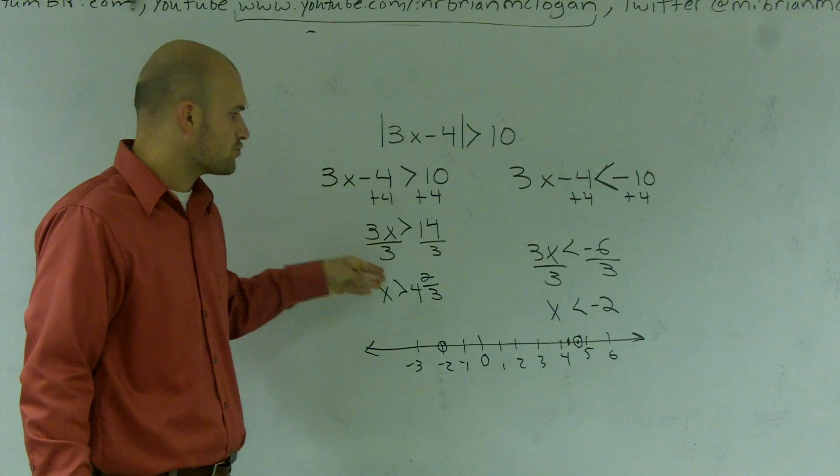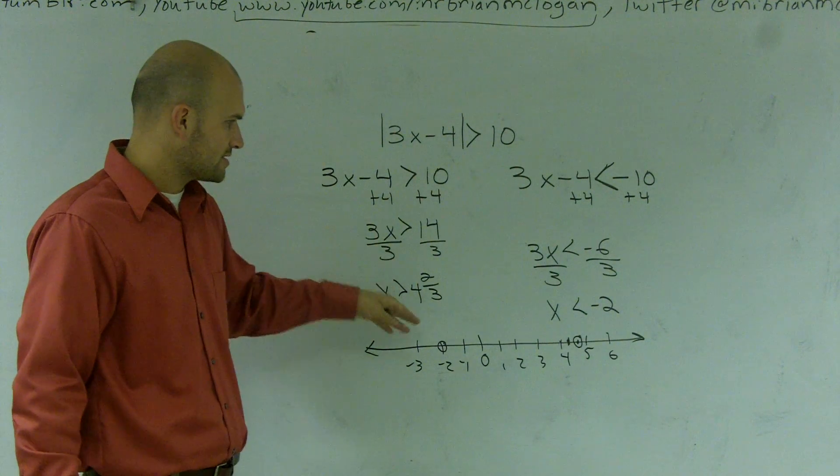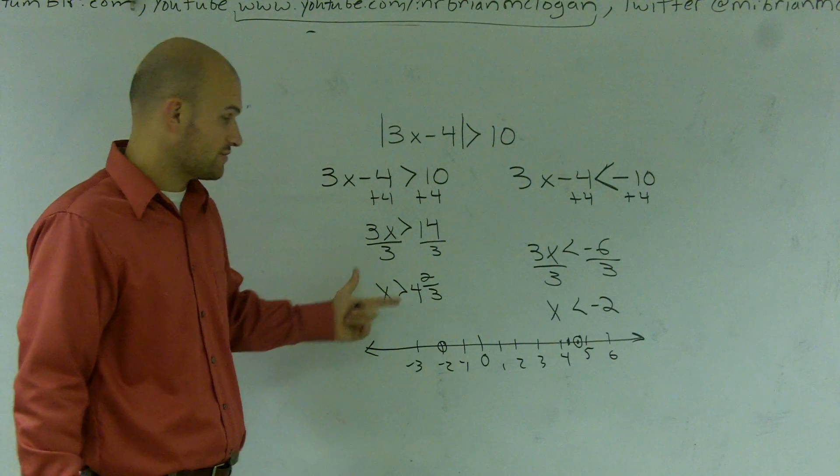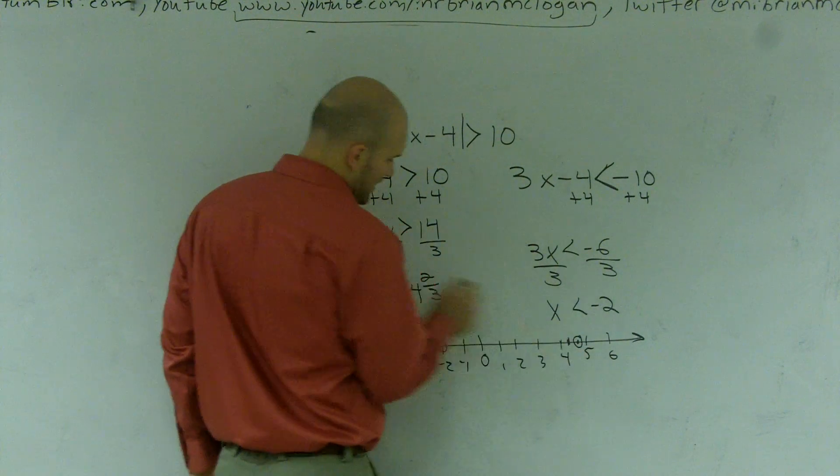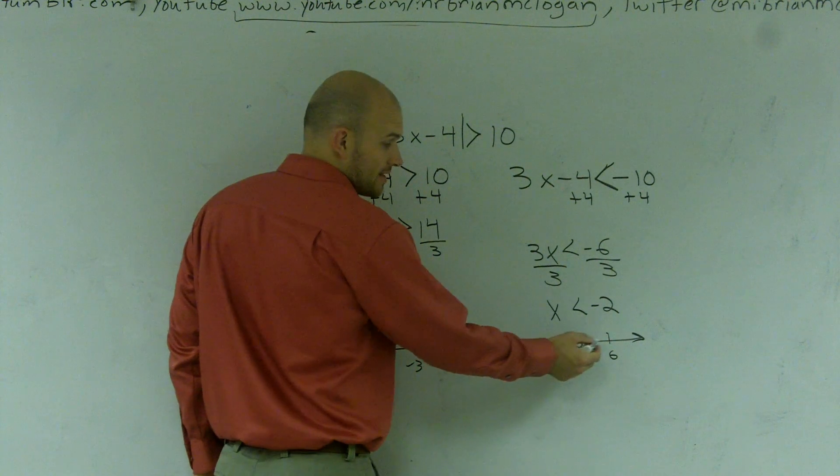So this says all the values that are greater than 4 and 2 thirds. And since it's not greater or equal to, it's just greater than, my circle is going to remain open. So all values greater than 4 and 2 thirds. Well, 5 is greater than, so is 6.